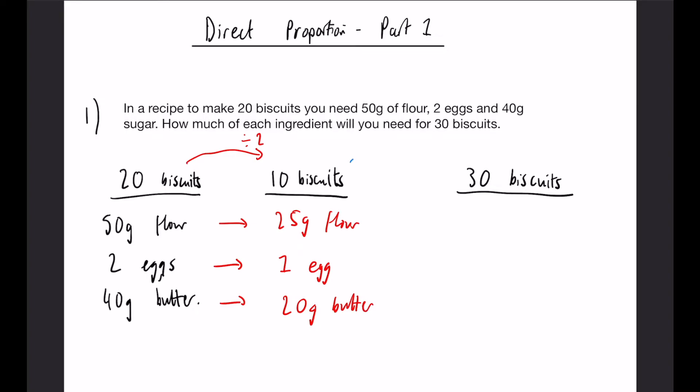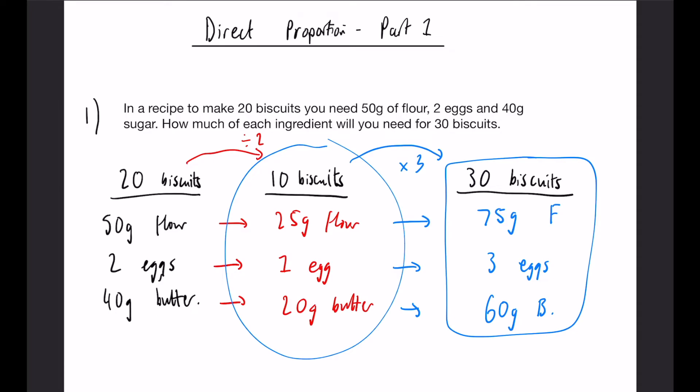And then if we compare the 10 to the 30 we can see that we multiplied by 3, so we're going to do that to all three of them here. That's going to leave us with 75 grams of flour, 3 eggs, and 60 grams of butter. And that is our final answer. Notice, always remember with these that you want to go down to something, whether it's 5 biscuits, 1 biscuit, but always make sure you go down to something because then going back up is going to be a lot easier.